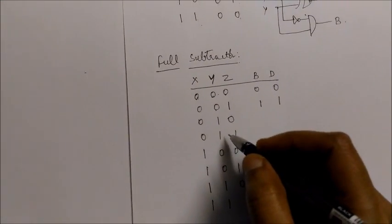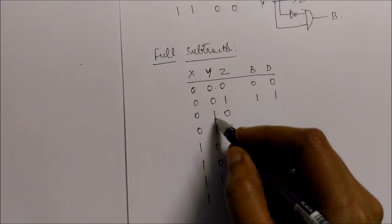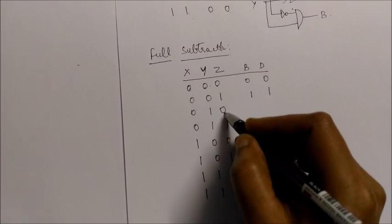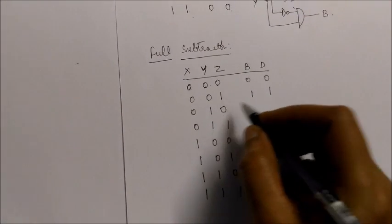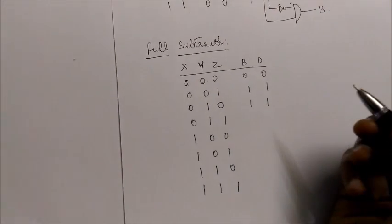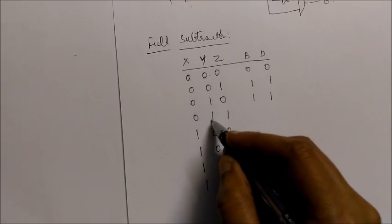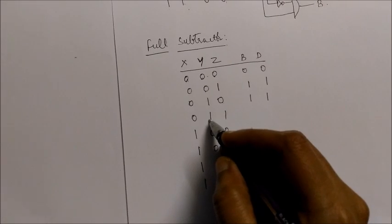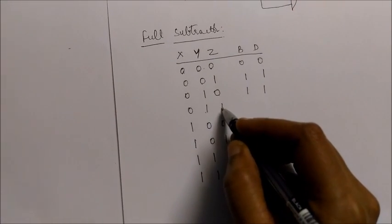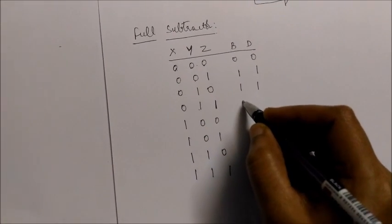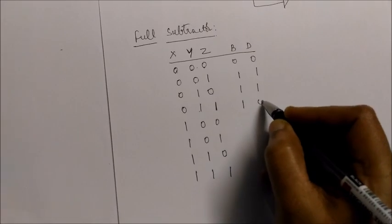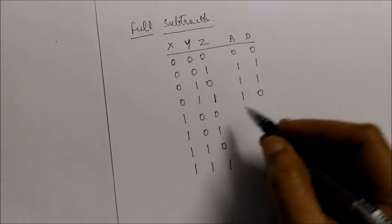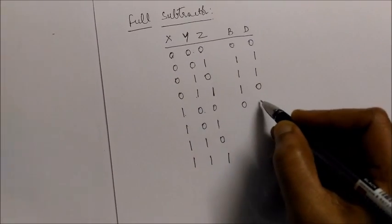For 0 minus 1 minus 0: difference is 1, borrow is 1. From difference 1 we subtract z=0, so we again get difference 1, borrow 1. For 0 minus 1 minus 1: difference is 1, borrow is 1. From difference 1, if 1 is subtracted, borrow will be 1 and difference will be 0.